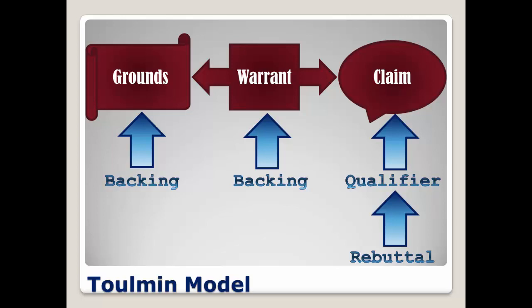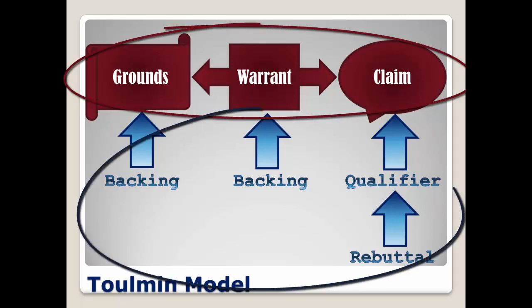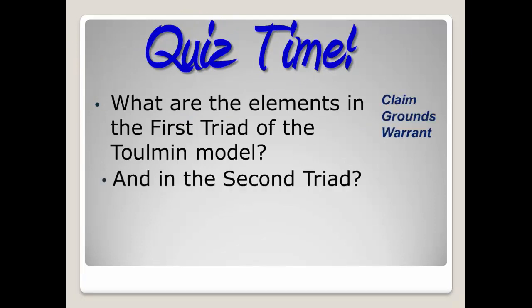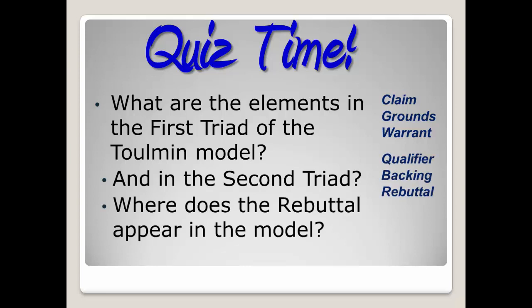So there you have it — the Toulmin model broken down into both triads: the first being grounds, claim, and warrant, and the second consisting of backing, qualifier, and rebuttal. Quiz time! What are the elements in the first triad of the Toulmin model? And in the second triad? Where does the rebuttal element appear in the model? Now you should not only better understand the model, but be able to identify the elements in arguments that you make, as well as arguments made by others. And just as important, you'll be able to identify which elements may be missing or weak, so that you can both refute others' arguments and improve your own.